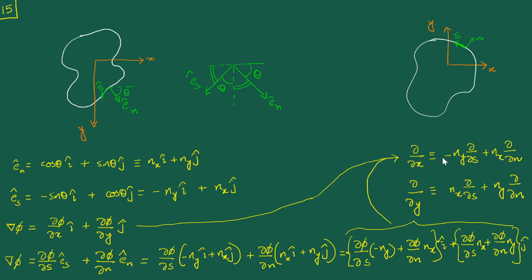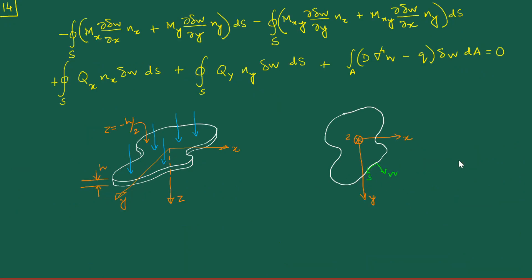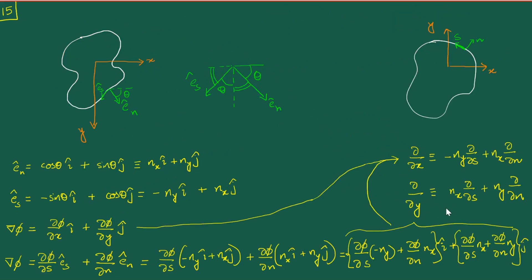These are the two relations which were our objective. We can now go back to the original equation and replace ∂/∂x and ∂/∂y with the relations we have just obtained, proceeding a step closer towards converting the entire equation with respect to the sn coordinate system — which we will do in the next lecture. Thank you very much.